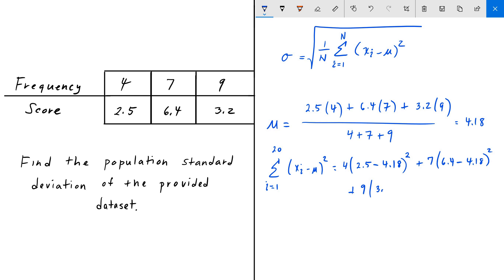The last term occurs nine times, has a score of 3.2, and then we subtract the mean from that score, 4.18 squared. When we do that we get 54.432. So now we can solve our standard deviation.